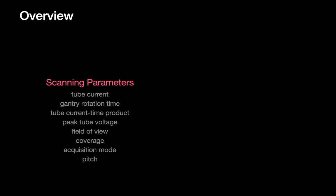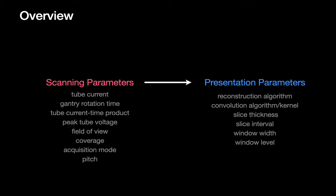There are many parameters that need to be specified in order for us to have CT images that can accurately answer clinical questions. We can divide these parameters into two major buckets: scanning parameters that must be specified before we radiate the patient in the CT machine, and presentation parameters after we've radiated the patient that specify how to convert the raw data into acceptable images for radiologists to interpret.